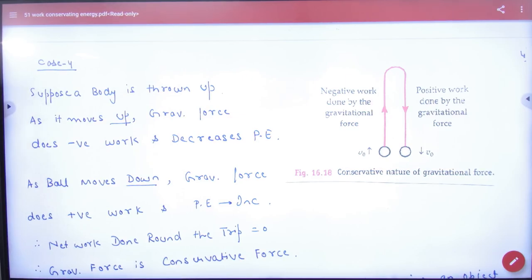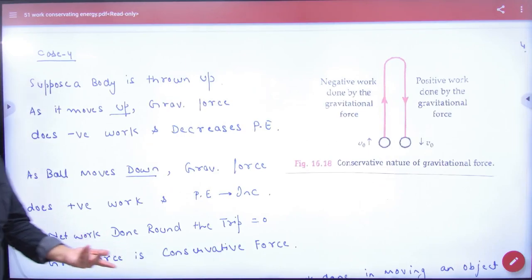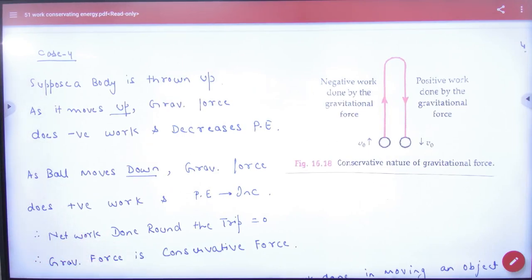To ye prove ho gaya. Work against gravity hai. To gravity ke against, net amount of work done kya hoga? Zero. To prove ho gaya conservative in nature. Gravitational force is conservative in nature.